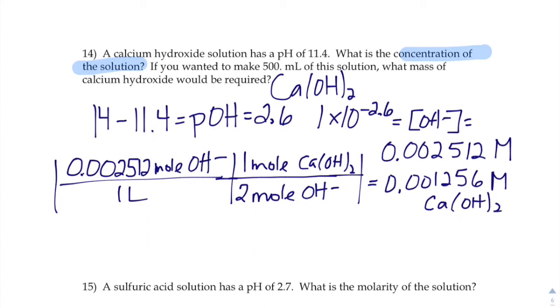So we get the first question answered. What is the concentration of the whole solution, the whole calcium hydroxide? Got it. Okay, what about the second part? If you wanted to make 500 milliliters of that solution, how many grams of calcium hydroxide would you have to measure out on the balance?